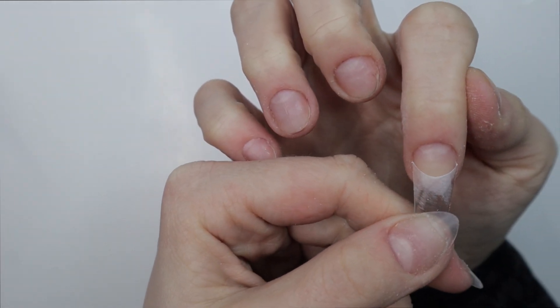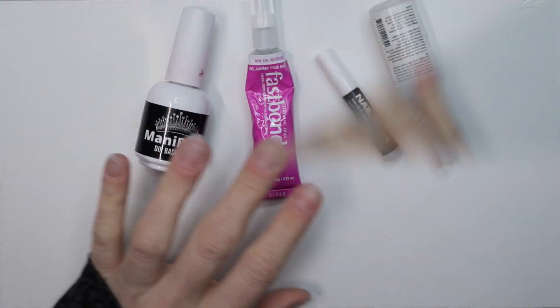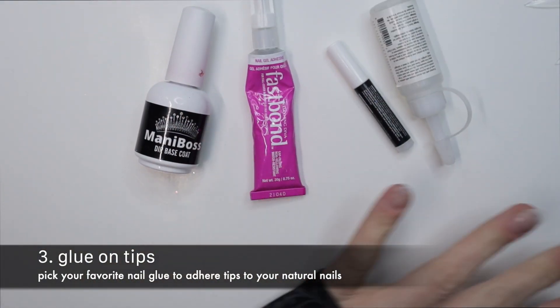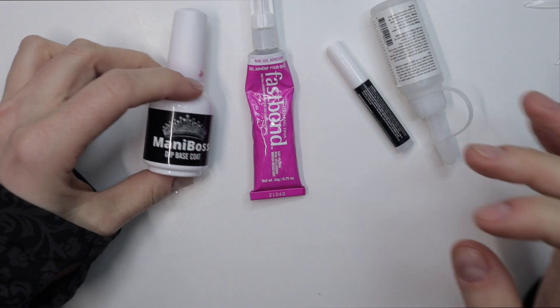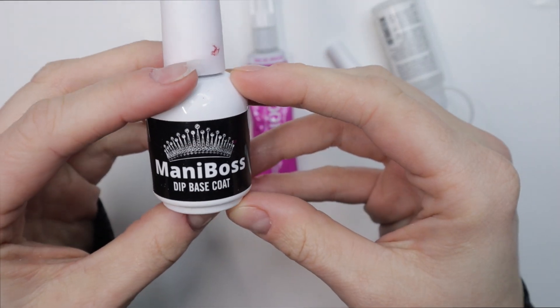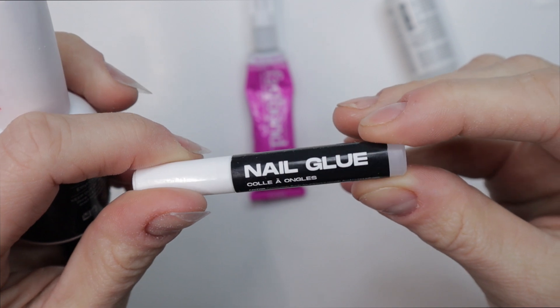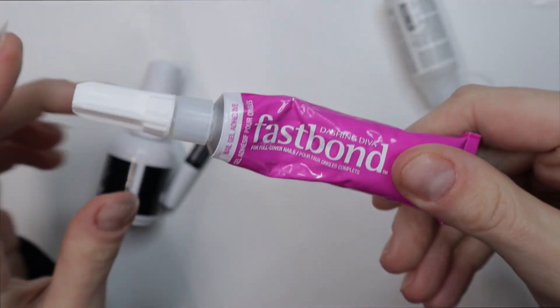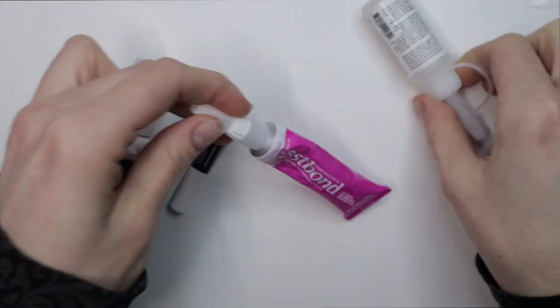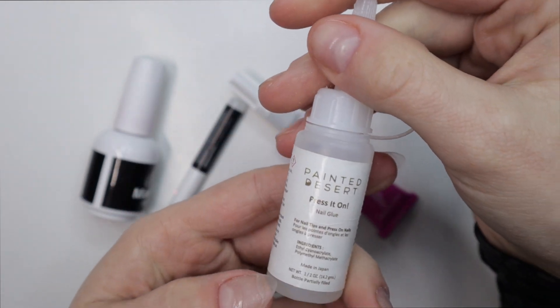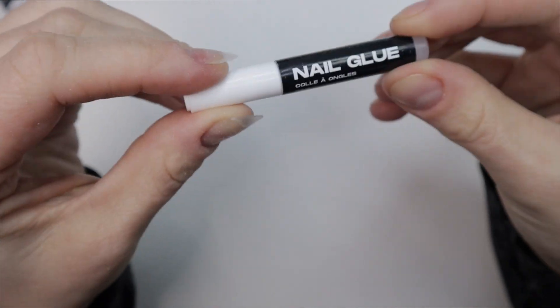Next up we have to work on applying these tips. In order to do that you need some sort of nail glue. Nail glue comes in so many different shapes and sizes in different packaging and products. Dip base coat is actually nail glue. You can use press-on nail glue. This fast bond nail glue is incredible. There's so many different types of nail glues out there.